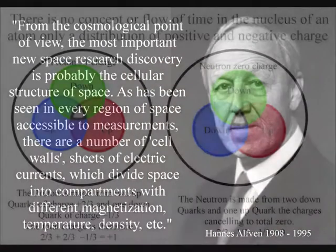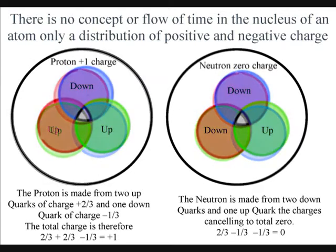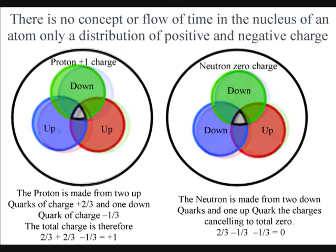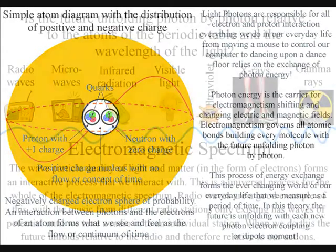If we take an individual atom, there is no concept or flow of time for the subatomic particles within the atom. There is only the division of charge into three parts. In this theory, this is because the atom is a standing wave in three-dimensional space. The electron clouds of probability that surround the atom form an interactive process with the electromagnetic spectrum.